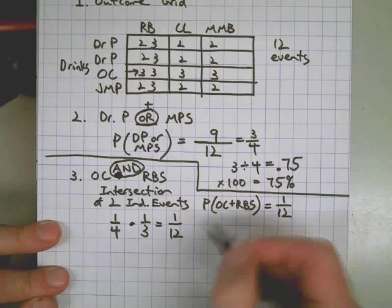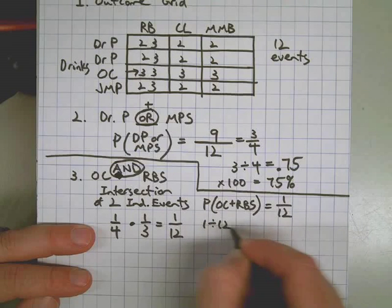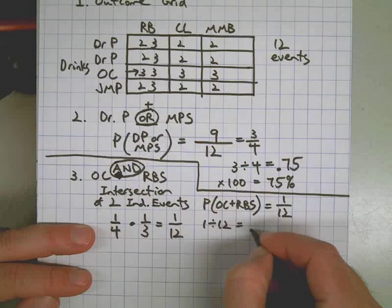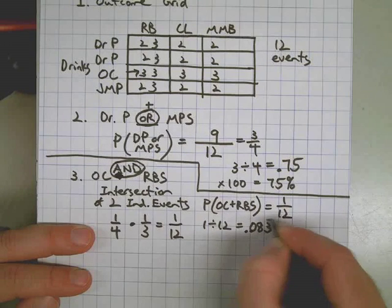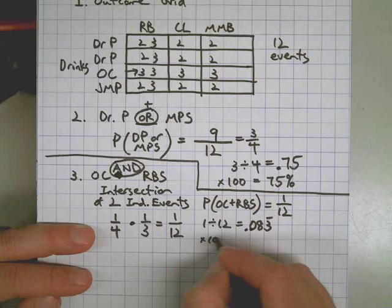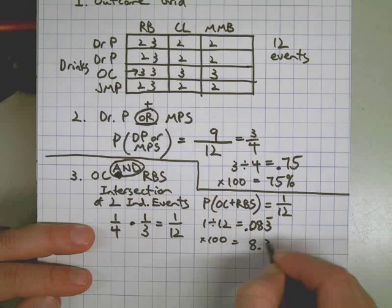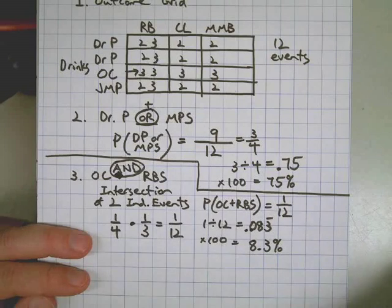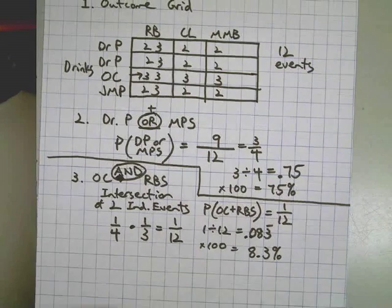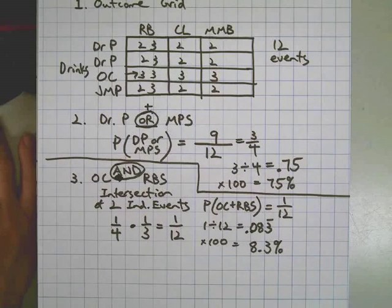Moving on up. If I do one divided by twelve in the calculator, I will get this. Three repeats. And if I want to convert that to a percentage. There we go. Not a very good chance of getting Orange Crush and a Roast Beef Slab.